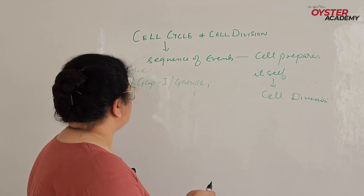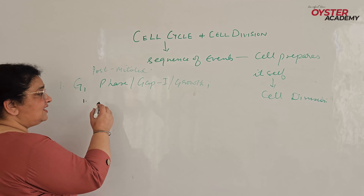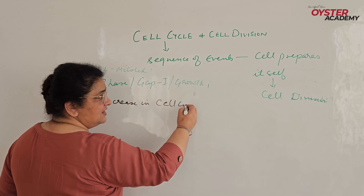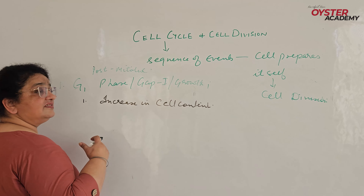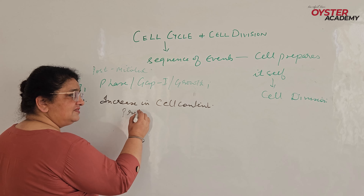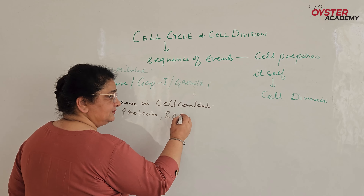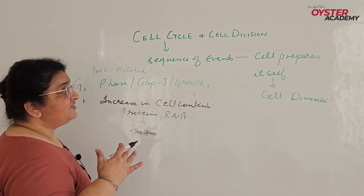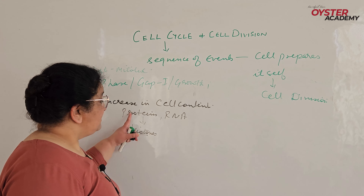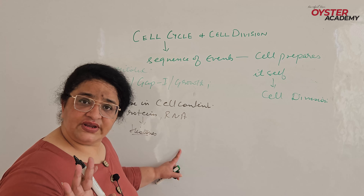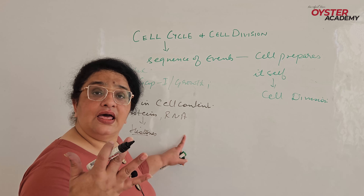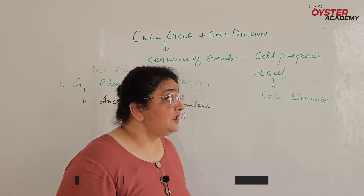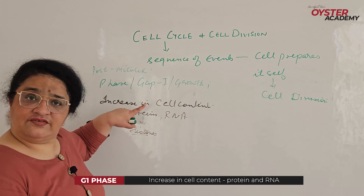The next topic is the cell cycle and its different stages. What is a cell cycle? It is a sequence of events for which the cell prepares itself. This sequence is known as the cell cycle — before the cell enters the mitotic division. The question arises: what is mitosis?